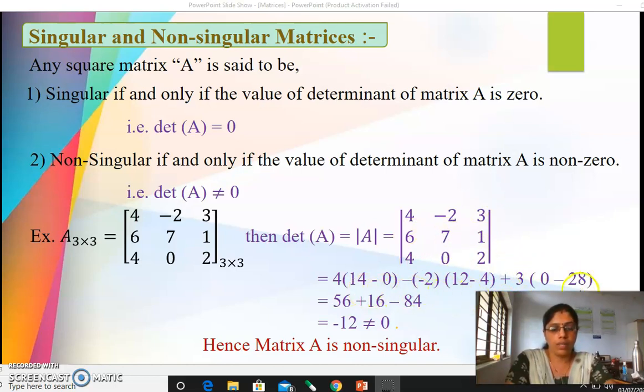The expansion of determinant is already known to you, we studied it in the last chapter. Hence it is calculated as 56 plus 2 into 8 that is plus 16 minus 84, and hence it is minus 12. See the value is non-zero. So what we can conclude is that the matrix is non-singular.